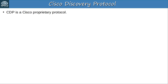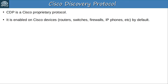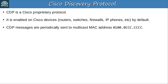Let's move on to talk about CDP specifically. CDP is a Cisco proprietary protocol, enabled on Cisco devices by default — Cisco routers, switches, firewalls, IP phones, etc. CDP messages are periodically sent to multicast MAC address 0100.0CCC.CCCC. Remember that MAC address — it will be in the flashcards. MAC addresses used by different protocols such as CDP, STP, PVST, HSRP, VRRP, etc. are difficult to memorize, and the Anki flashcards are very helpful for this. You can add a specific tag to these MAC address cards to review them whenever you want.